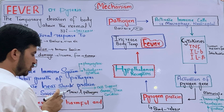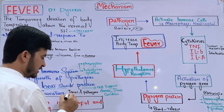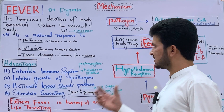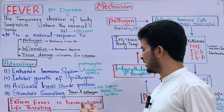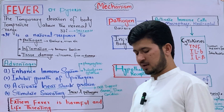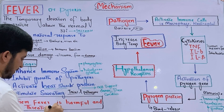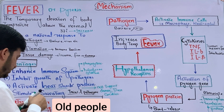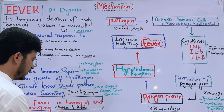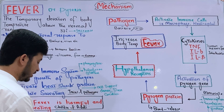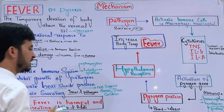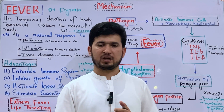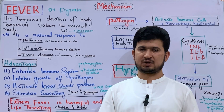The disadvantage: Extreme Pyrexia is life-threatening. If the body temperature increases beyond 41.5 degrees centigrade, it becomes life-threatening — especially for children. This concludes the homeostasis chapter. The next chapter will start next time. Thank you so much.